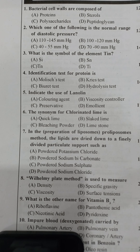Peptidoglycan constitutes as much as 95 percent of the cell wall in some gram-positive bacteria, and as little as 5 to 10 percent in gram-negative bacteria.